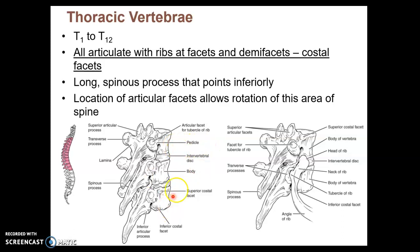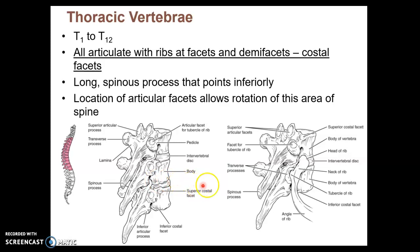Now we can distinguish thoracic vertebrae. There are 12 of them, T1 to T12, because they have ribs articulating with them — 12 pairs of ribs articulate with the 12 thoracic vertebrae. Their joint surfaces are called facets or demifacets, which are flat articular surfaces for the ribs. You can see these flat joint surfaces — there's a demifacet on the thoracic vertebra. Another indication of thoracic vertebrae is that the spinous processes are long and tend to point downwards.